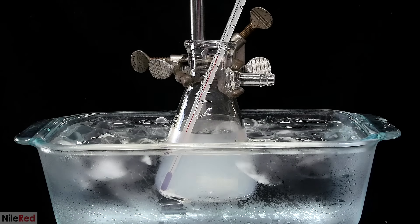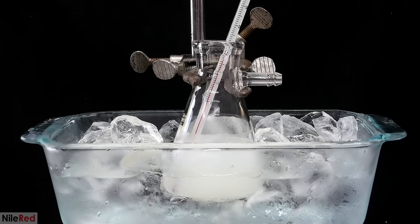As more potassium hydroxide is added, the solution slowly gets more and more opaque, until it's eventually completely white.